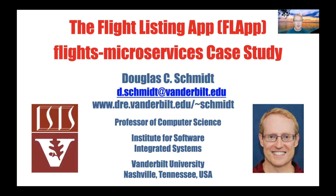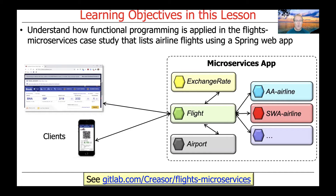Welcome to part one of our three-part lesson on the Flights Microservices project, which is part of the Flight Listing App, or FLAP, case study. In this first part of the lesson, we'll talk about how functional programming is applied to the Flights Microservices case study in order to list airline flights using a Spring web app. You can access all the source code described in this video and the other two parts at the link at the bottom of the slide.